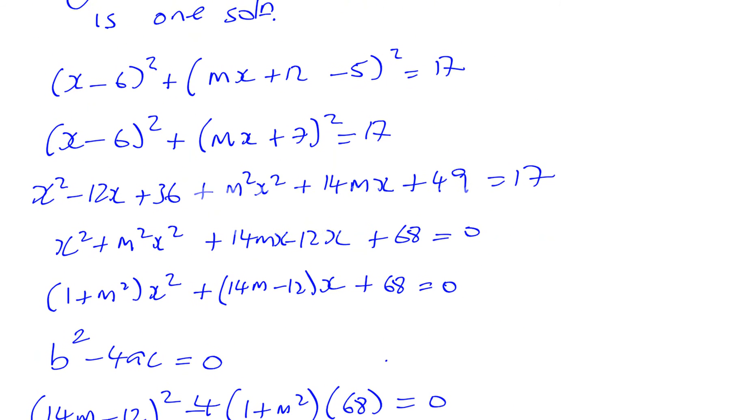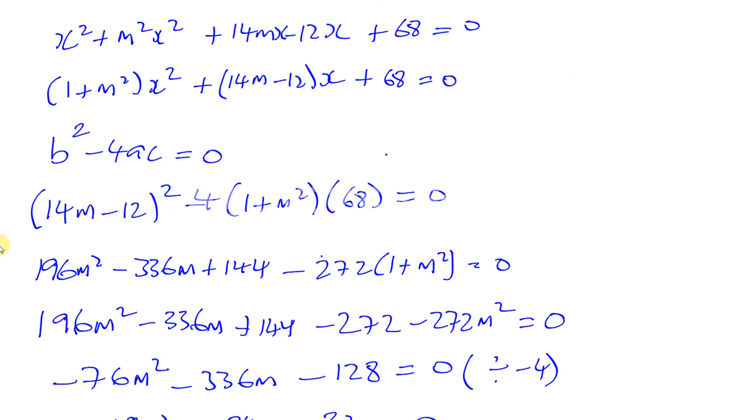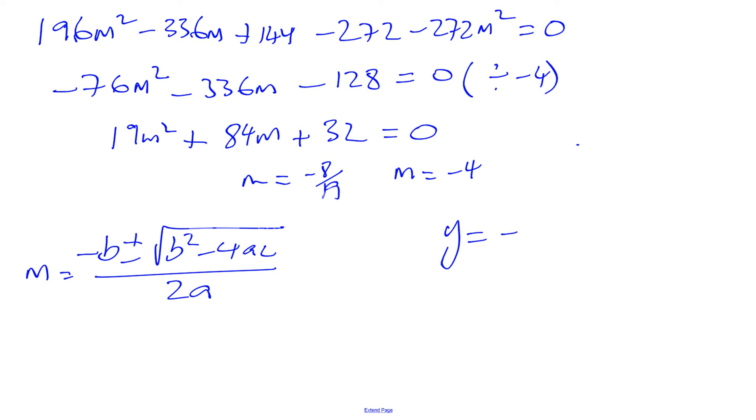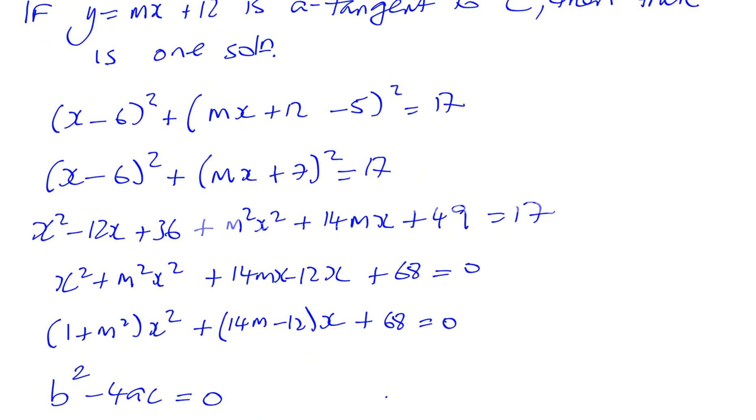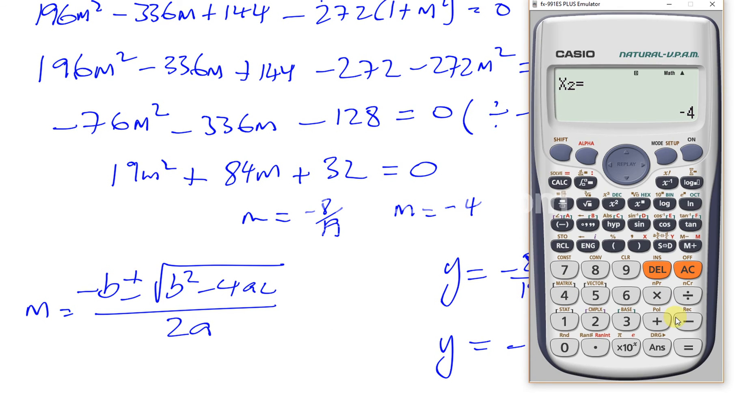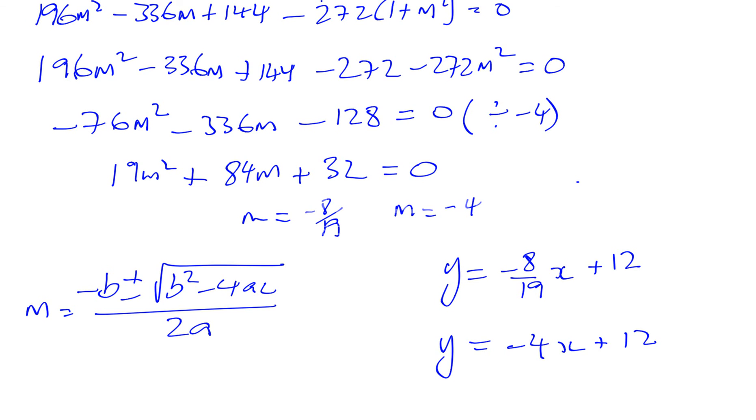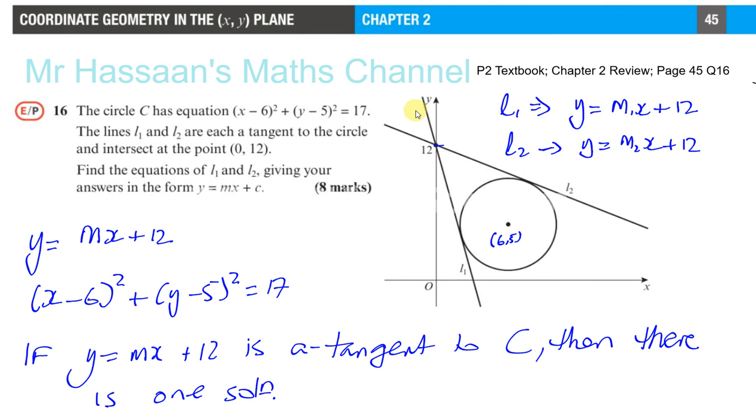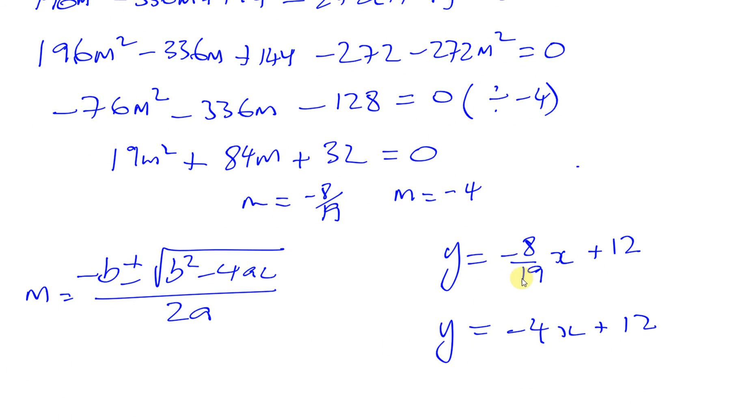Okay, and that will give you the values of m. So the two equations are y = mx + 12, so the equations are y = -8/19x + 12, or the other possible line is y = -4x + 12. They were both negative, as we can see. Minus 4 and minus 8 over 19. And you can see from the diagram as well, they both have negative gradients. One is steep, this is the minus 4 one, and the other one is less steep. That's probably minus 8 over 19. So those are the two solutions to this problem.